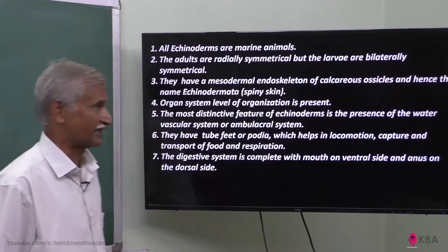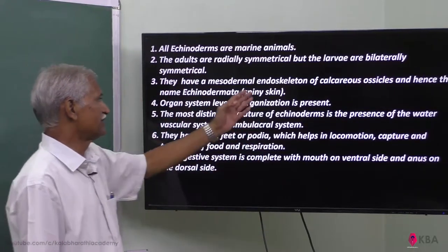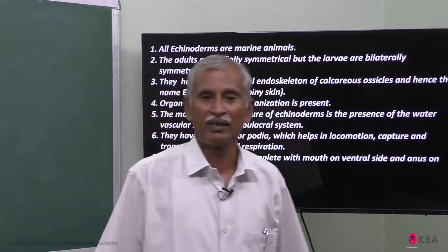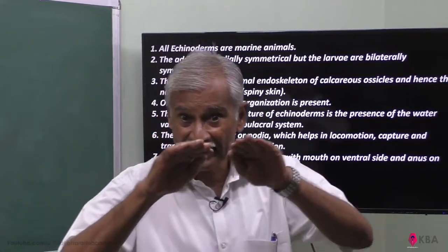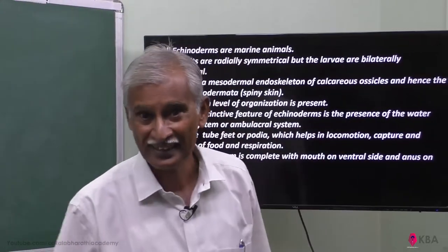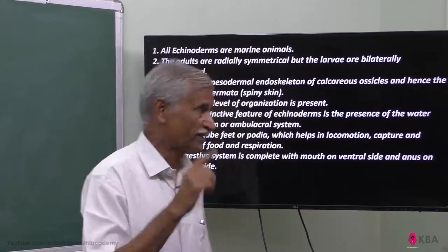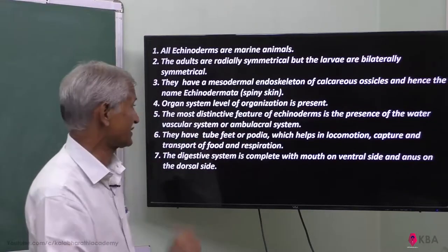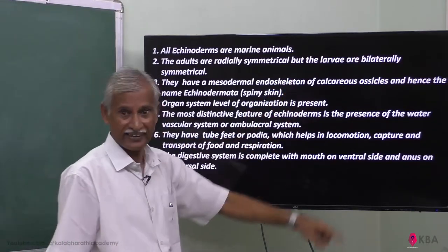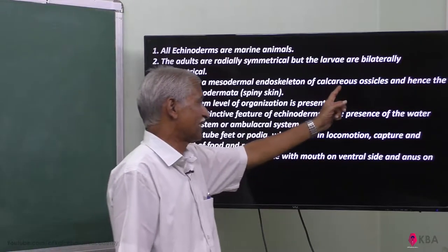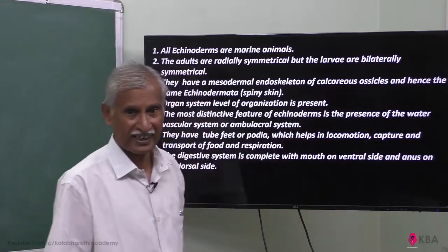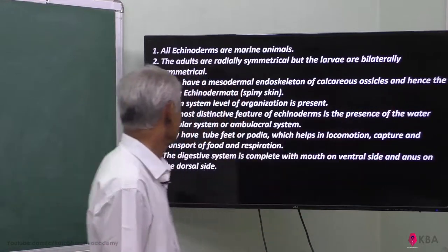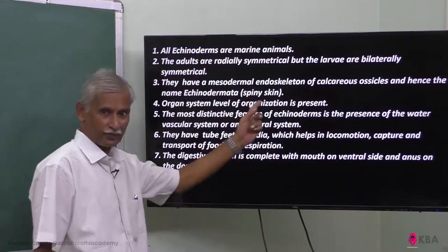They have a mesodermal endoskeleton. Unlike Arthropods which have an exoskeleton, we are going to talk about the mesodermal layer — an endoskeleton inside bone structure, developed from calcareous ossicles. Hence the name Echinoderms, meaning Spine Skin.